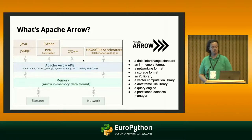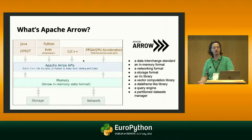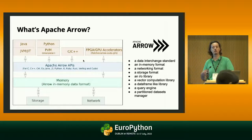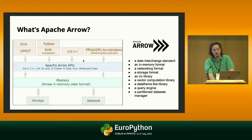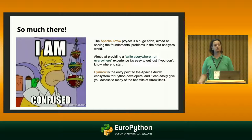But Apache Arrow is not just a format. It's also an implementation of that format, providing an I/O library to read various data files into the in-memory format of Arrow. It provides a vector computation library, a data frame-like library, a query engine named Acero, and a way to manage partitioned data spread across multiple files. The end goal is to allow you to write your code in any language — Java, Python, C++ — and always work with the Arrow library implemented for that language, making it a lingua franca that every data analytics software can share without the cost of translation.